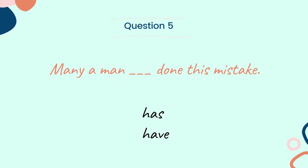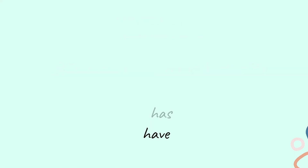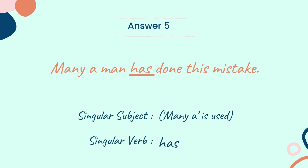Let's look into the next question. Question 5: 'Many a man dash done this mistake.' Choose the correct verb between the two words: has and have. And the answer is: Many a man has done this mistake. Here 'many a' is used in the sentence, so the subject will be singular. As the subject is singular, the verb 'has' is used here.